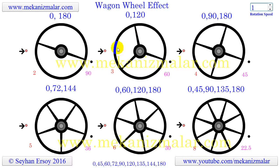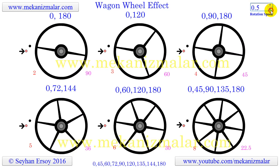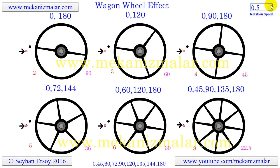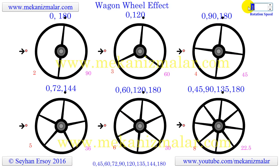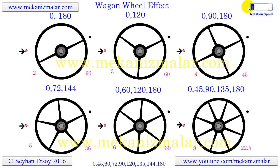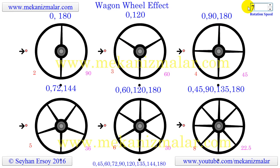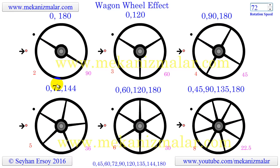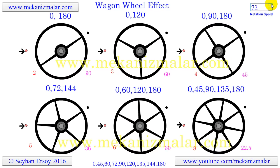Of course for a zero value all the wheels will stand still, but if an angle coincides with any spoke angle above the wheel other than zero, we perceive the wheel to be standing still when actually it is rotating. These cases are indicated by the large red circles.